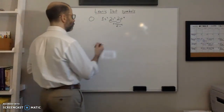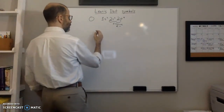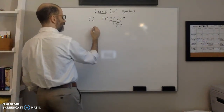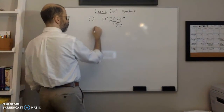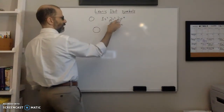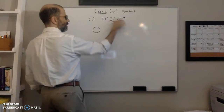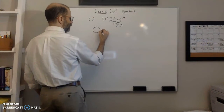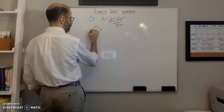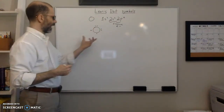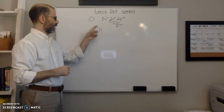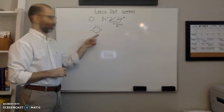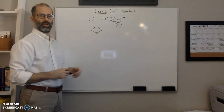The way we write the Lewis symbol — for example, oxygen — is we use dots, which is why these are called Lewis dot symbols. Each dot represents a valence electron. Oxygen has six valence electrons, so the Lewis dot symbol for oxygen has two pairs and two unpaired electrons.